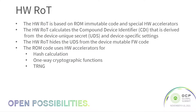The core element to allow all of that is the hardware root of trust. The hardware root of trust is based on ROM immutable code and special hardware accelerators. The hardware root of trust calculates the compound device identifier, CDI, that is derived from the device unique secret, UDS, and some device-specific settings. The hardware root of trust then hides the UDS from the device mutable firmware code so it cannot use that at a later stage.